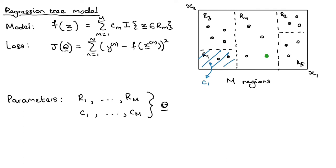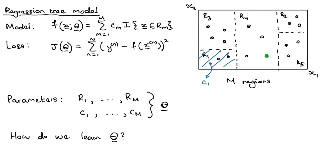The model prediction is also a function of the model parameters. Sometimes the theta notation is dropped for brevity, but the model prediction and the loss both depend on the current model parameters. The key question is: how do we figure out the regions and the C's?